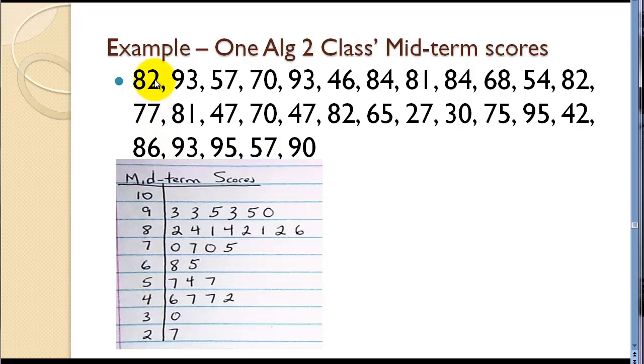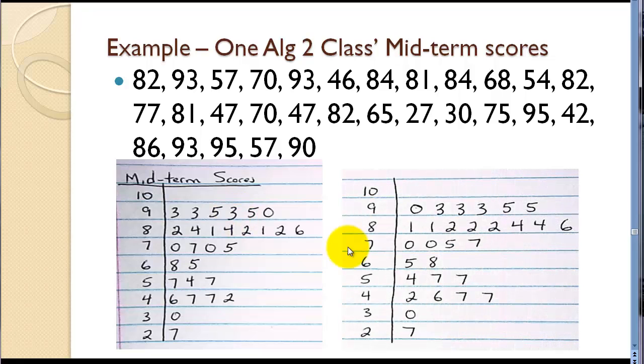We write the leaf, the digit on the line. So I do this in two paths. In the first path, I just go through the numbers and write each number. 82 would go here, 93 is this, 57 is this, and we go through the list in order. Now we want these in order. So now we've kind of grouped the numbers by tens, so now we can order each of these rows. And now we have an ordered stem and leaf plot.